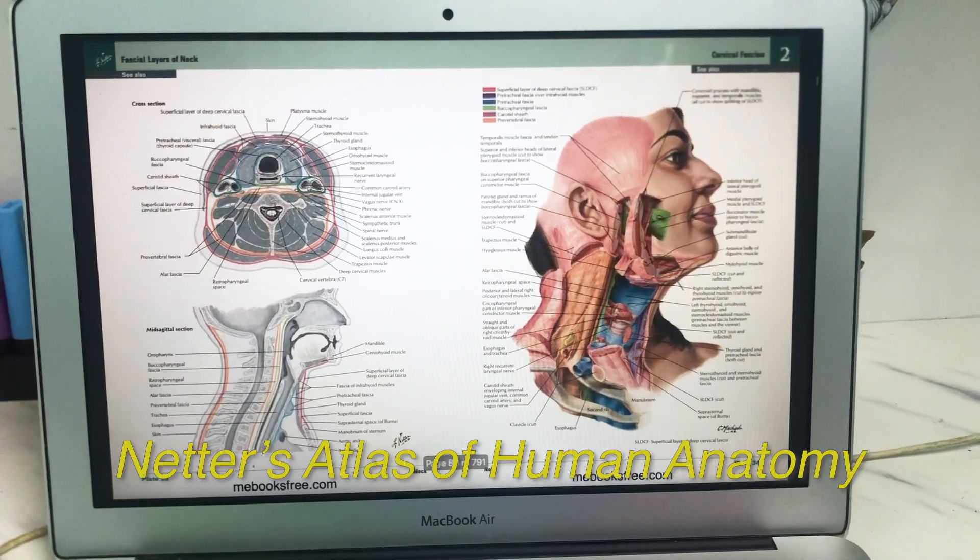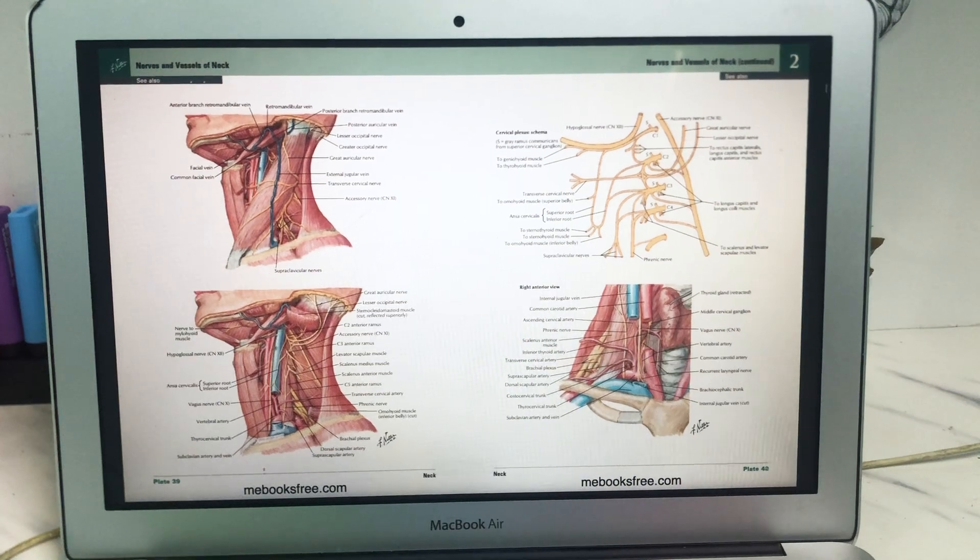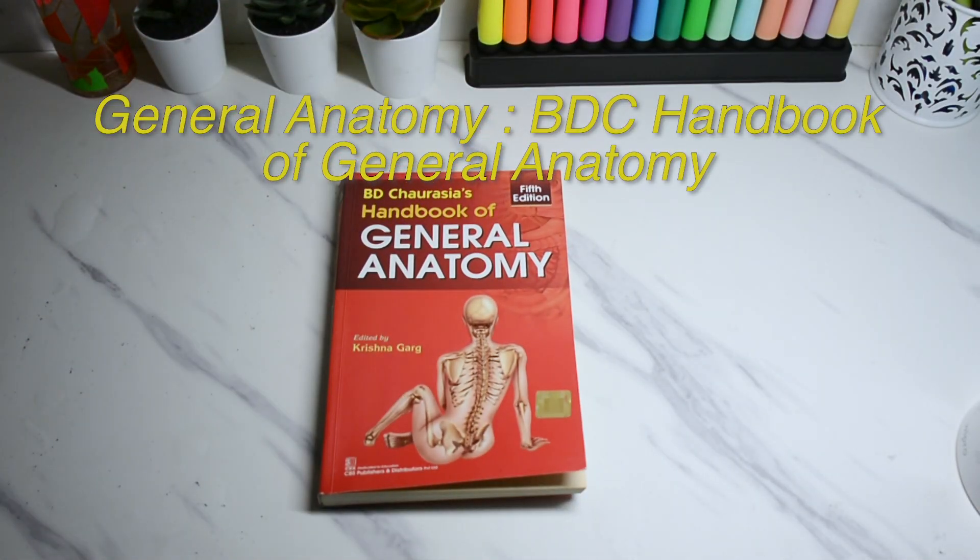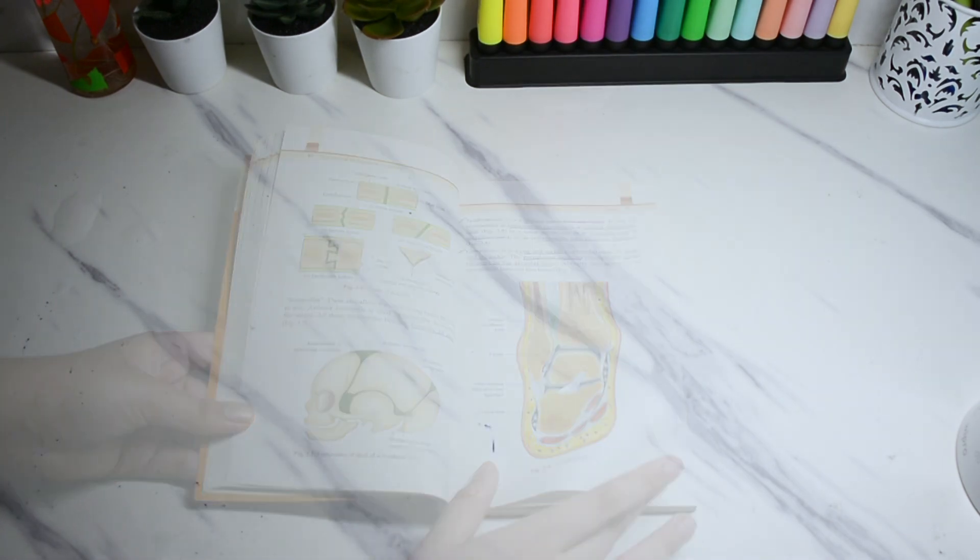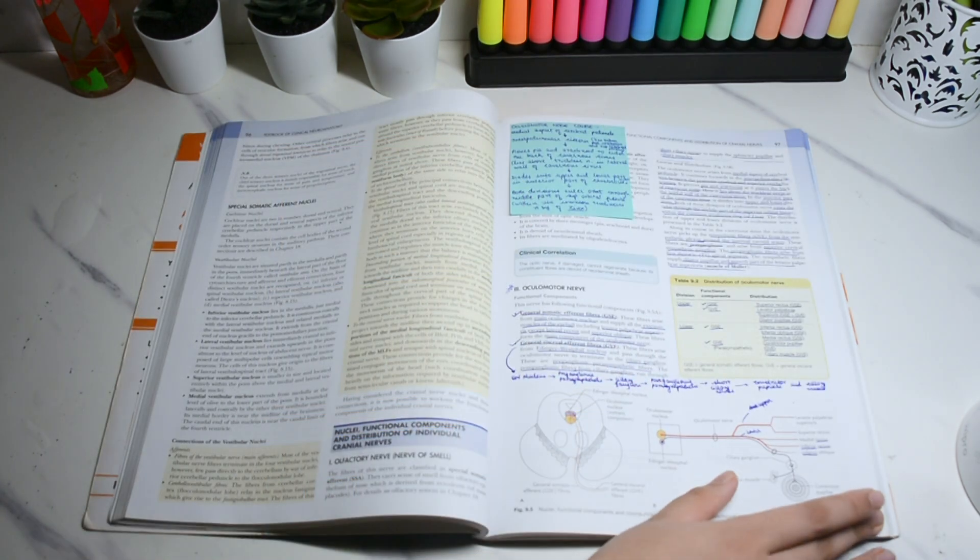I used a PDF version of Netto's Atlas to understand the concepts more clearly since the diagrams here are better. For general anatomy I used BDC's general anatomy handbook. For neuro anatomy, Vishram Singh. It's clean and precise with easily understandable diagrams and just the required amount of applied anatomy.